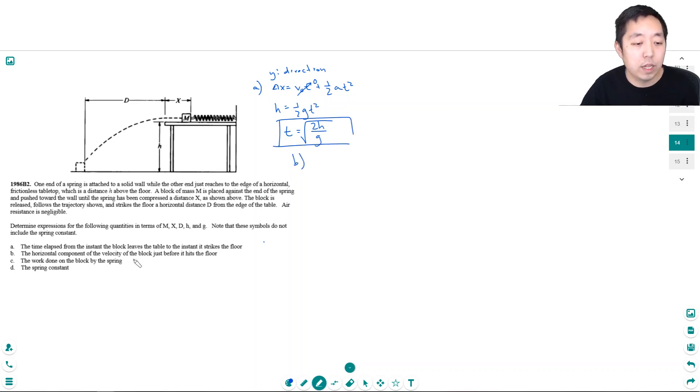The horizontal component of the velocity of the block just before it hits the floor. Well, the horizontal component of the velocity is the horizontal component of the velocity right here.